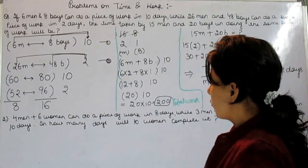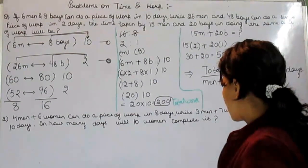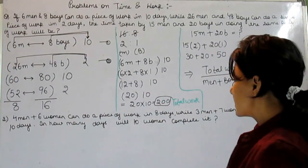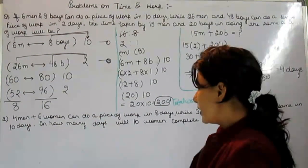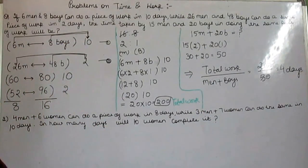Let's see second question. 4 men plus 6 women can do a piece of work in 8 days, while 3 men plus 7 women can do the same work in 10 days. In how many days will 10 women complete it? Same process we need to follow.